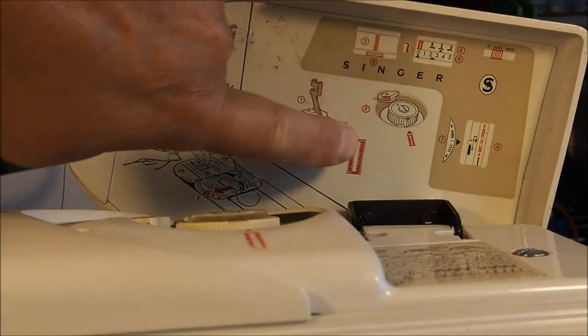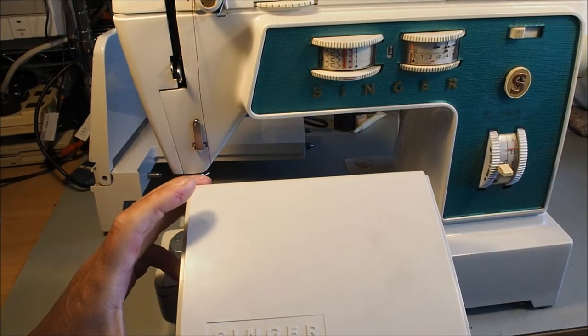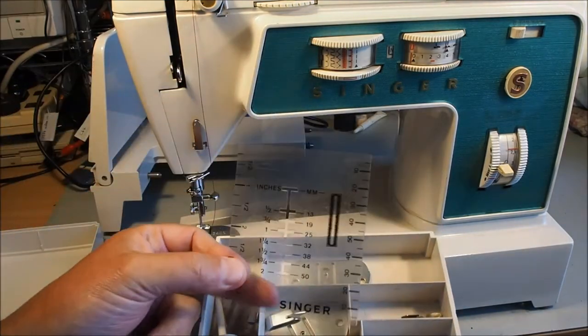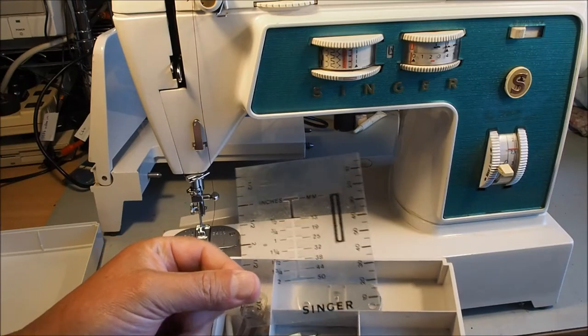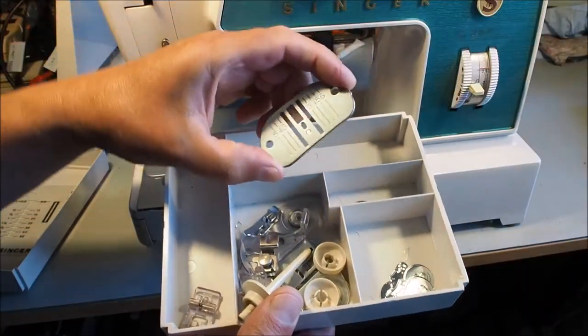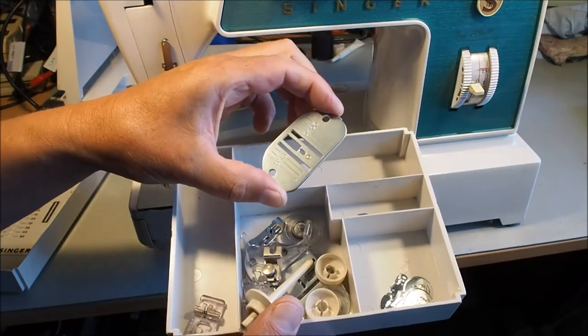The supplied accessory box comes with a ruler for buttonholing and measuring. That plate there is the chain stitching plate - I'll show that in another video.